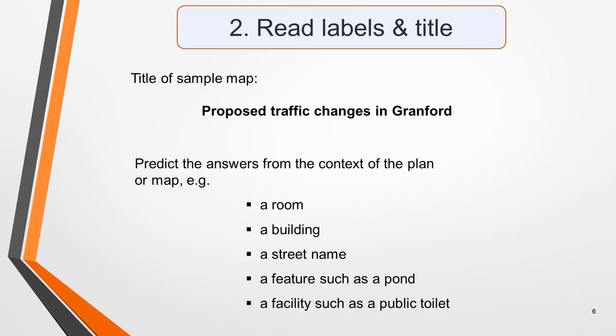Next, read the labels and title. Learn as much as you can about the map or plan from the existing labels and the words in the answer list if there is one. Some maps and plans will also have a title, which is another big clue as to the context of the question and what the recording will be about. For example, our sample map has the title: proposed traffic changes in Granford. Knowing this should bring a few ideas to mind as to the sort of information included in the recording. The more familiar you are with the vocabulary and the layout of the graphic, the easier it will be to understand and follow what the speakers say.